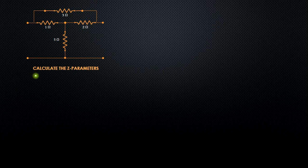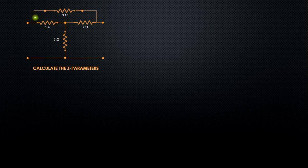Welcome. In this lecture we will try to calculate the Z-parameters for a given network. This particular configuration is termed as the T-bridge configuration because it has a T-shape and this particular resistance is bridging it, so this configuration is termed as the T-bridge configuration and we are required to find out the Z-parameters for this.